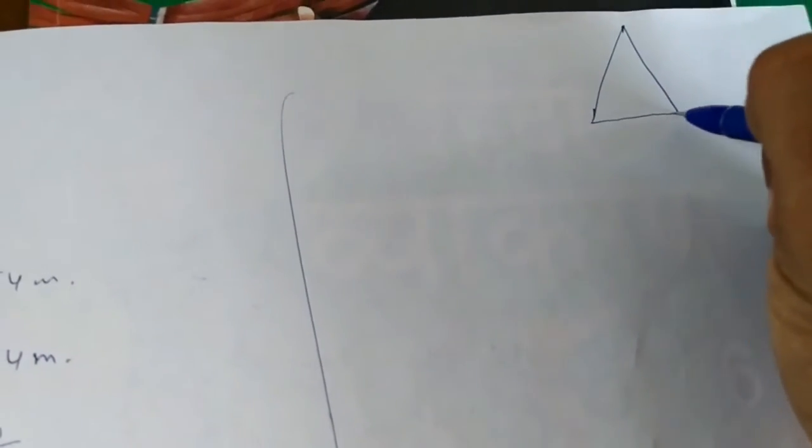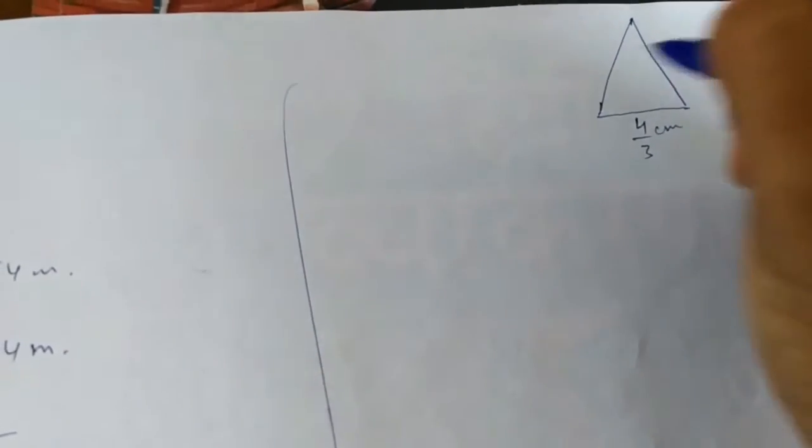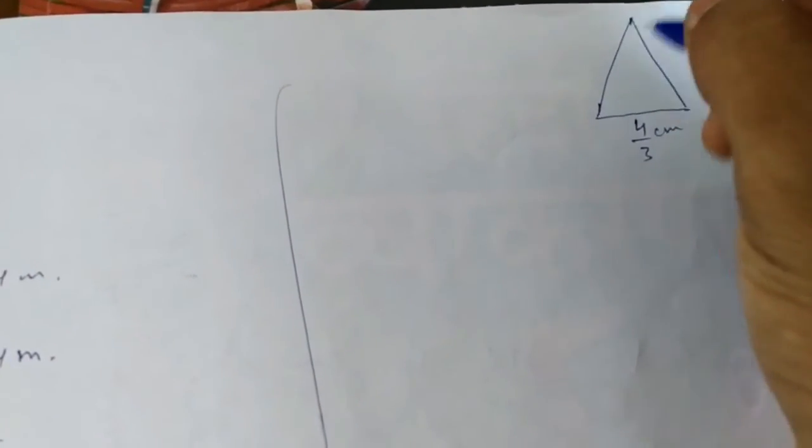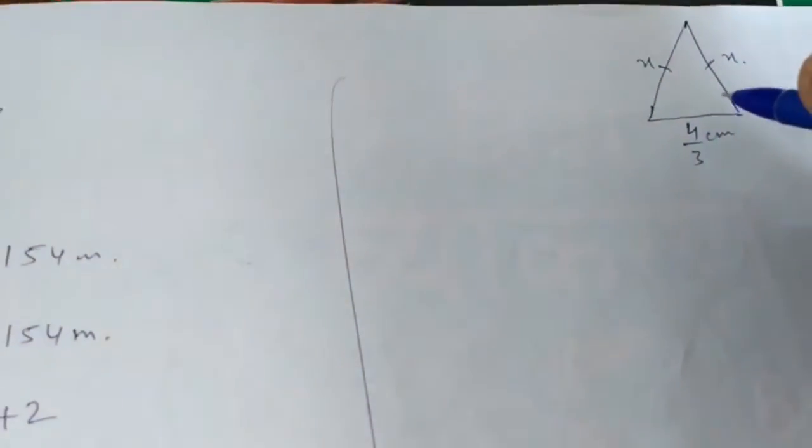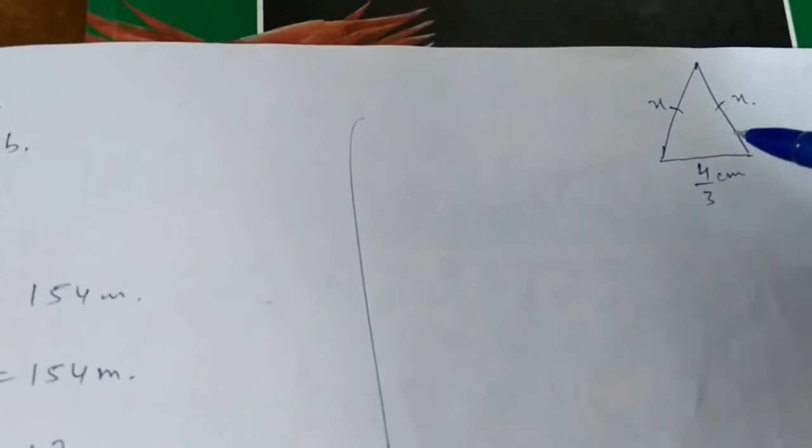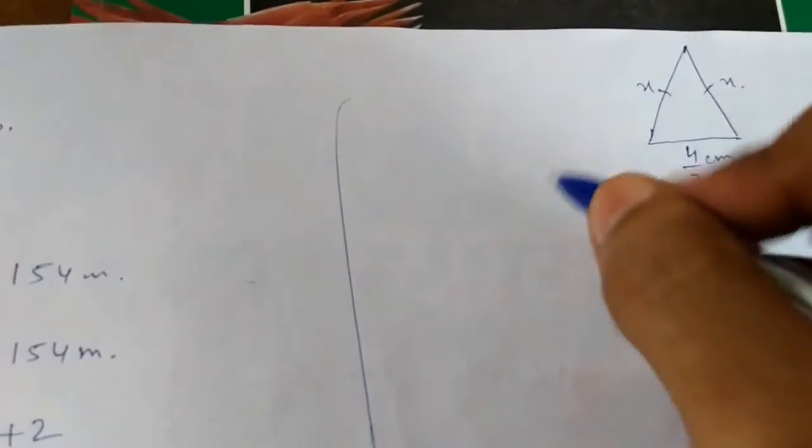We have a triangle. The base is 4 by 3 cm. In an isosceles triangle, two sides are equal. So this is x and this is also x. The total perimeter is 4 and 2 by 15.